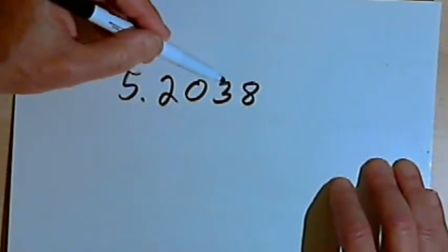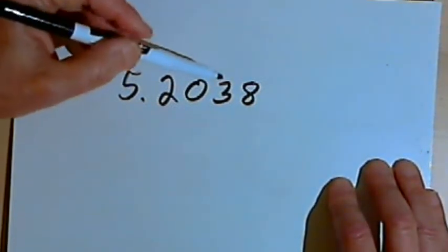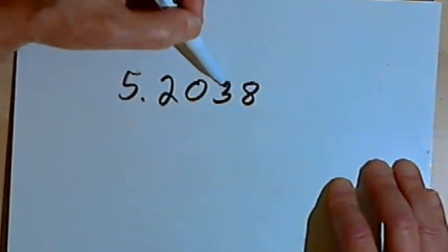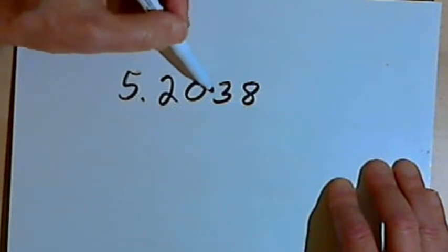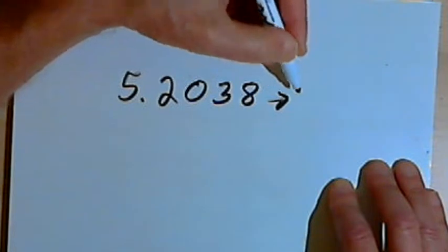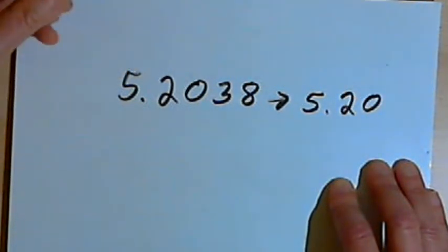And since that digit, the 3, is less than 5, what I'm going to do is drop all of the digits that are to the right of the decimal place that I want, the second decimal place, and leave what remains exactly as it is. So I'm going to end up with 5.20.